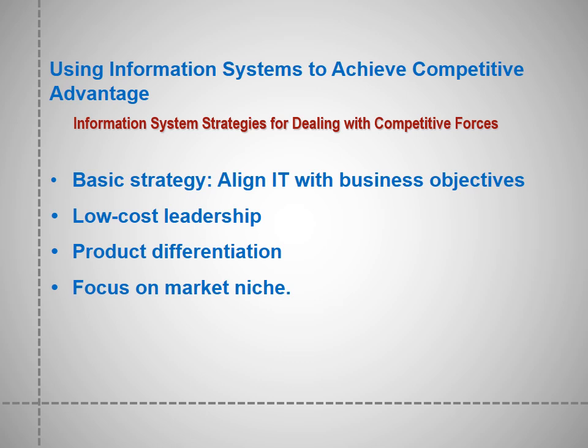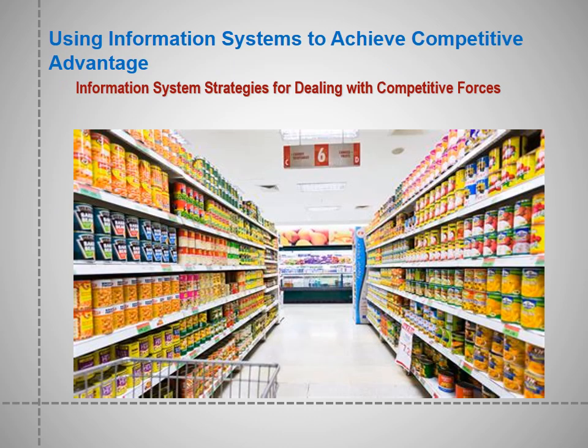Next is product differentiation and focus on a market niche. Supermarkets and large retail stores like Walmart use sales data captured at the checkout counter to determine which items have sold and need to be reordered. Walmart's continuous replenishment system transmits restock orders directly to its suppliers, enabling Walmart to keep costs low while fine-tuning its merchandise to meet customer demands. Any store with a similar business model can implement this strategy.